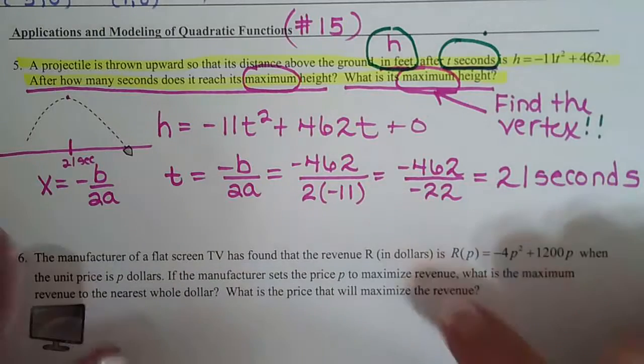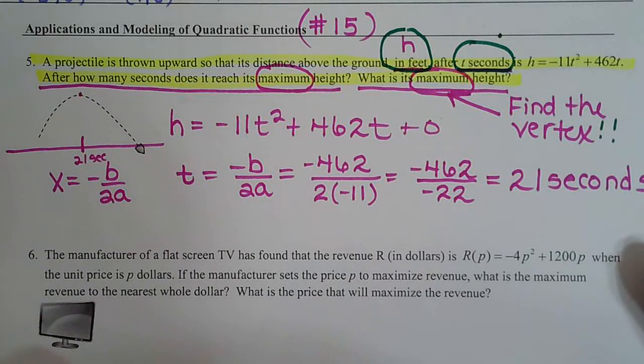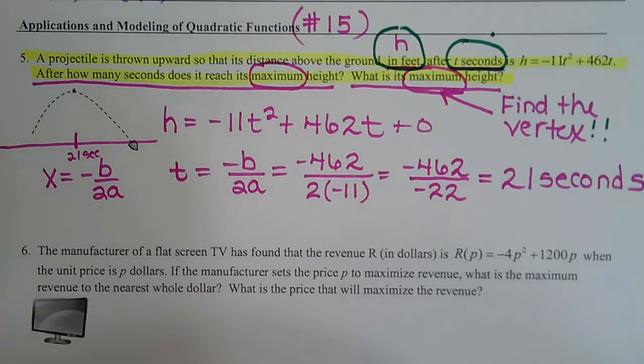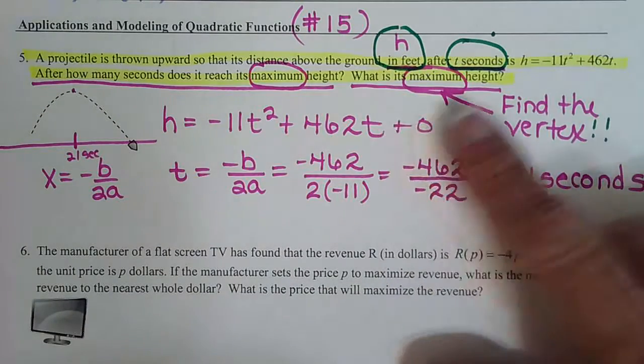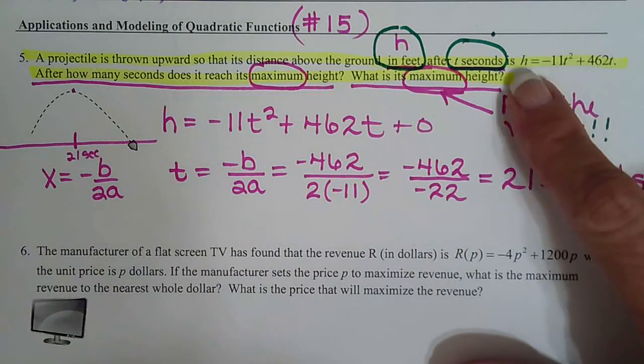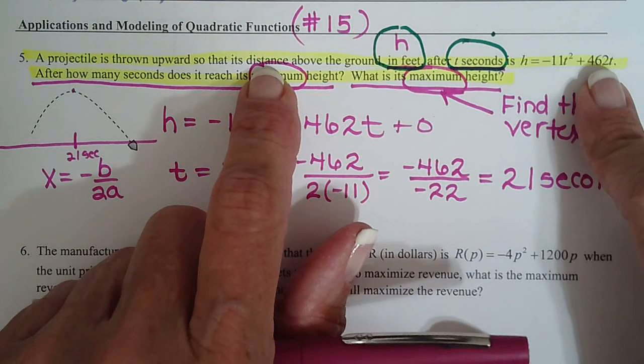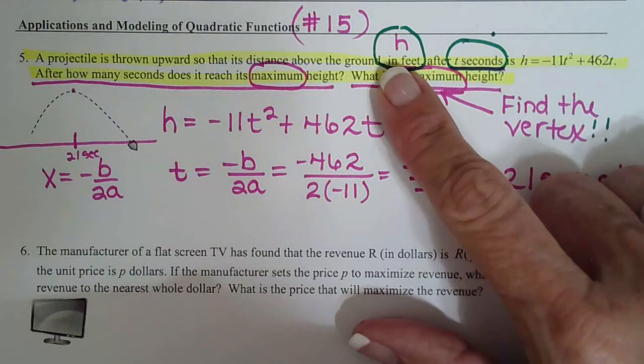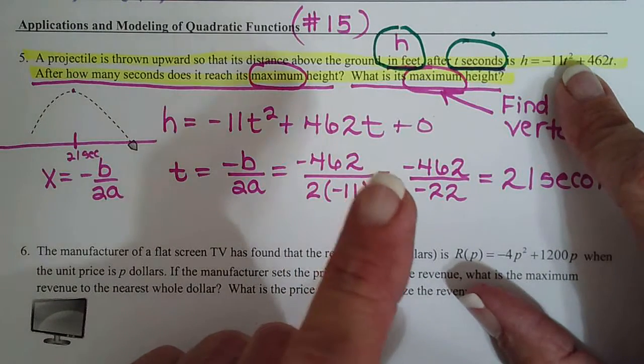Okay, we're working on number five on page ten of our 7.5 notes. We're dissecting this sentence here. We had this equation they told us - this equation is for distance above the ground or height, and it's in feet, and t represents seconds.